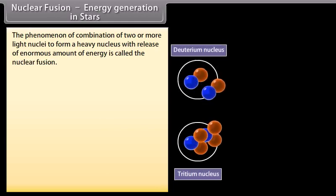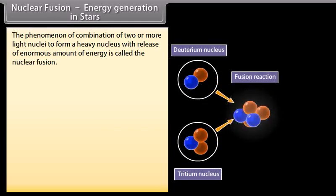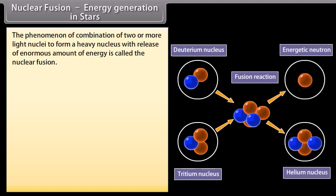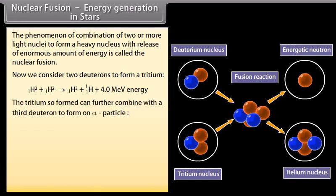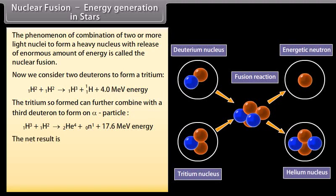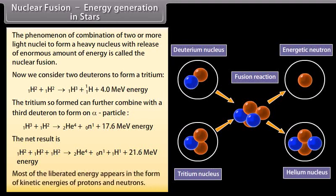Nuclear fusion. Energy generation in stars. The phenomenon of combination of two or more light nuclei to form a heavy nucleus with release of enormous amount of energy is called the nuclear fusion. Now we consider two deuterons to form a tritium. The tritium so formed can further combine with the third neutron to form an alpha particle. The net result is... Most of the liberated energy appears in the form of kinetic energies of protons and neutrons.